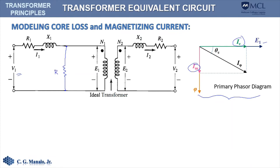We can represent that current by installing a resistance parallel with E sub 1, and we label that resistance R sub C. That resistance will draw a current I sub C that is in phase with E sub 1, because the component installed is a resistance. To represent I sub M, take note that it is 90 degrees lagging from E sub 1, and therefore we can represent I sub M as an inductor with a value X sub M. This element will draw a current I sub M that is lagging E sub 1 by 90 degrees.